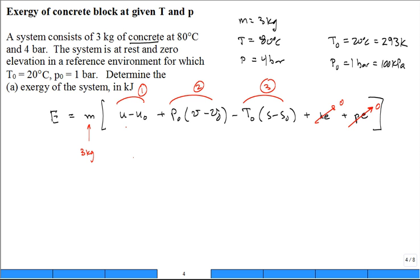This is the internal energy of the concrete, the specific internal energy, at that temperature of 80 degrees C and pressure four bar. How do I calculate that?